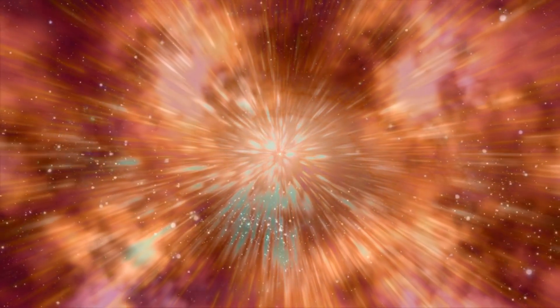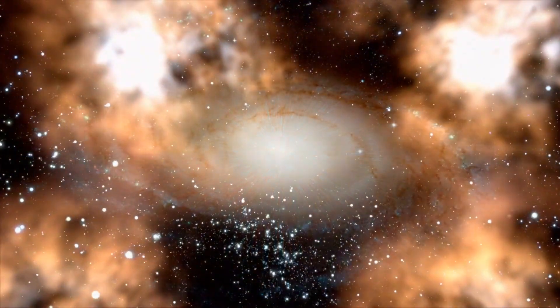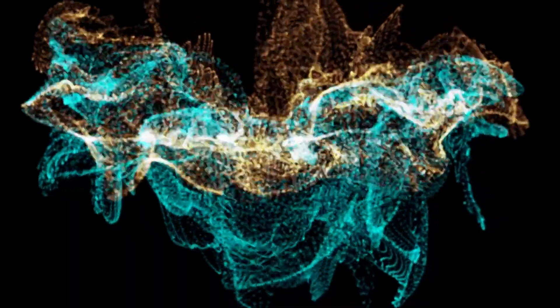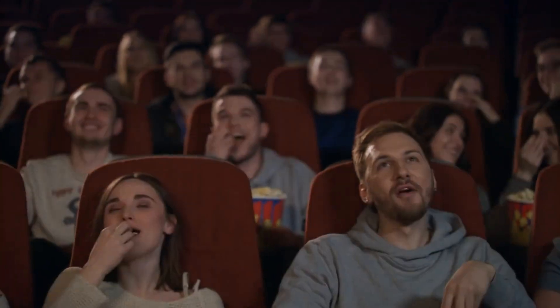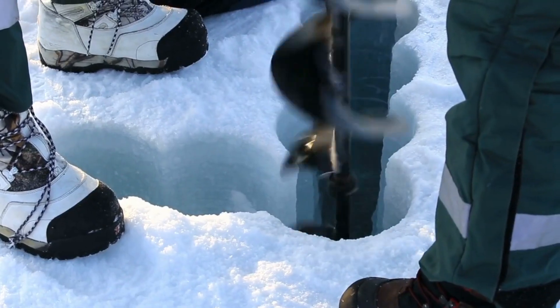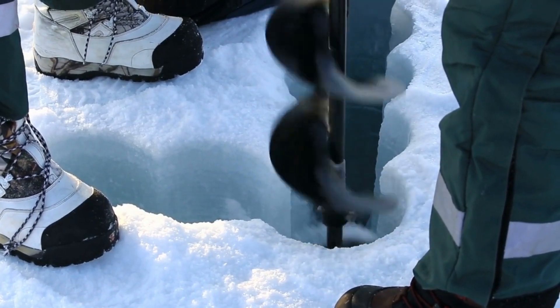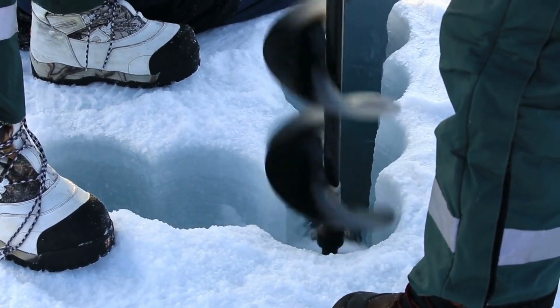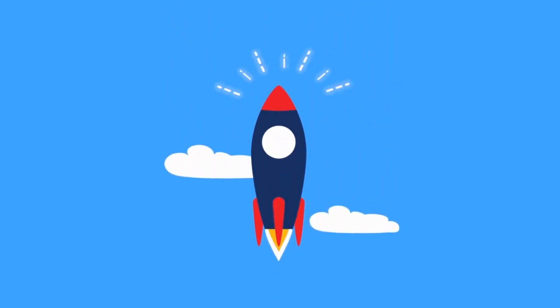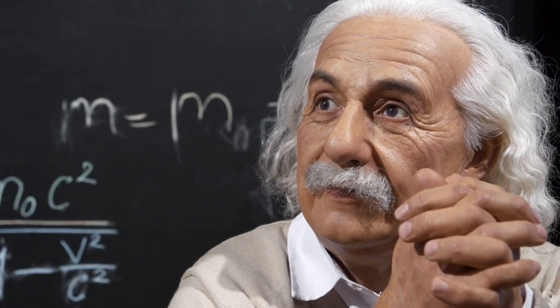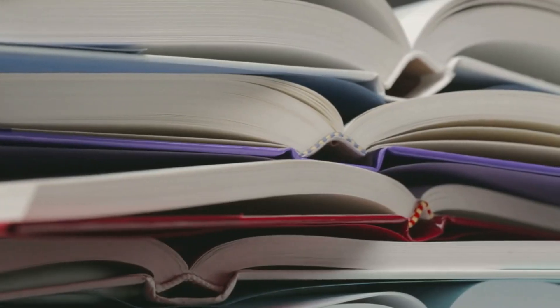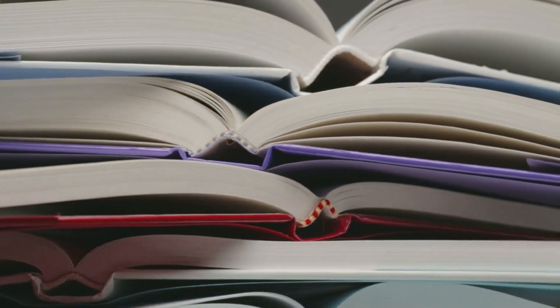Let's rewind the cosmic VHS tape and ask a question that has puzzled scientists for decades. What happened before the Big Bang? Traditionally, the Big Bang is seen as the beginning of everything: time, space, matter, energy. But what if there's a prologue? Some scientists argue that asking what happened before the Big Bang is like asking what's north of the North Pole. According to the theory of general relativity, time and space began at the Big Bang, so there's no before to speak of.